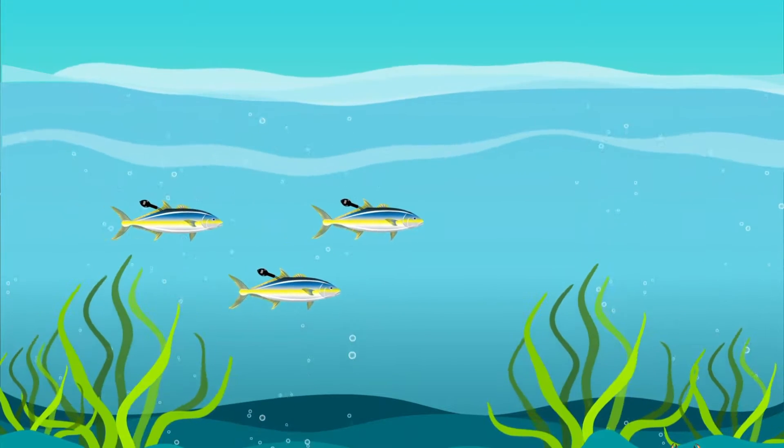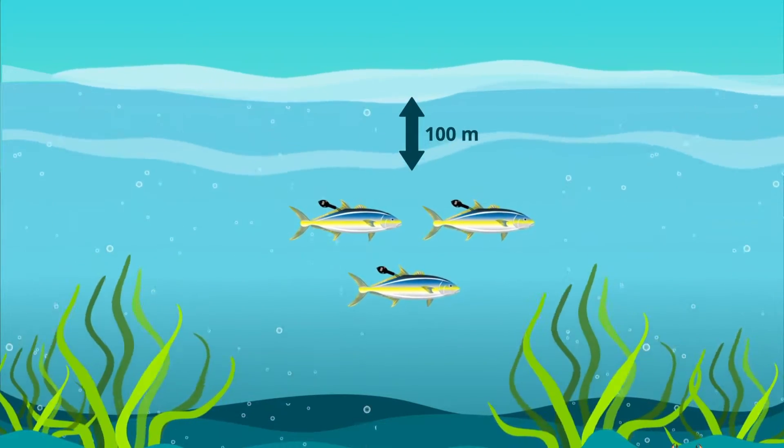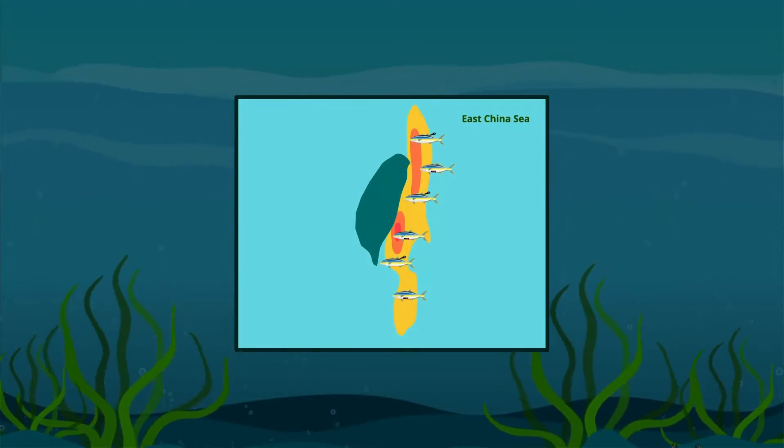The researchers found that tagged fish primarily reside at a depth of around 100 meters along the eastern coast of Taiwan.